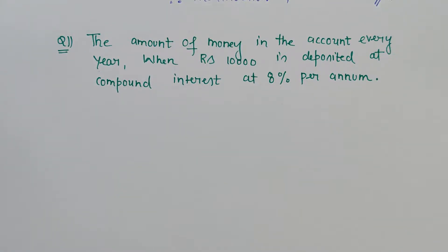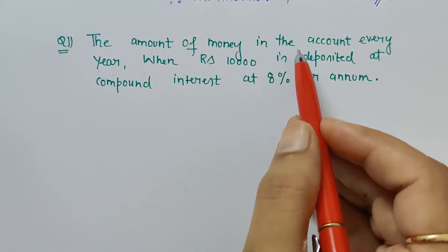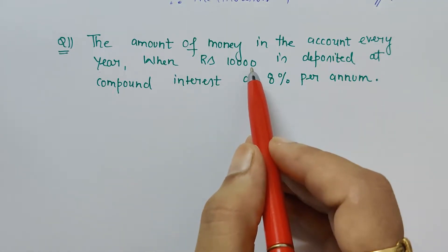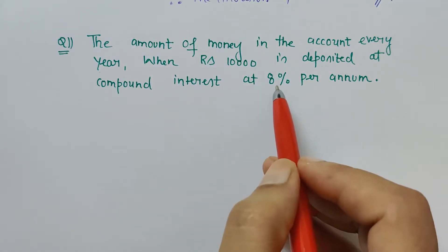How much is deposited? Rs 10,000 is deposited, so 10,000 is the principal amount. And the rate of interest given to us is 8%.